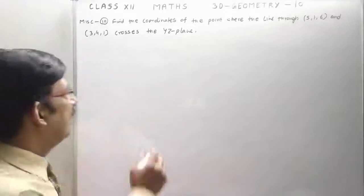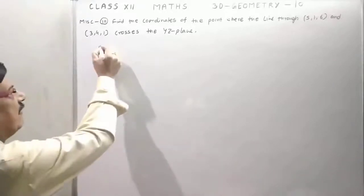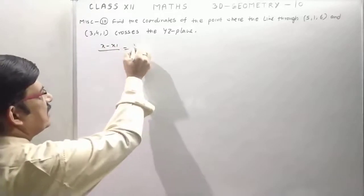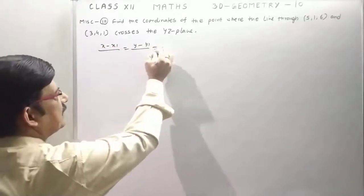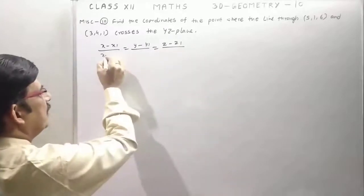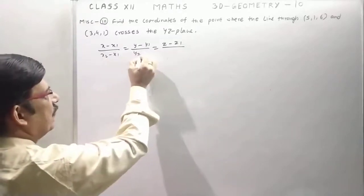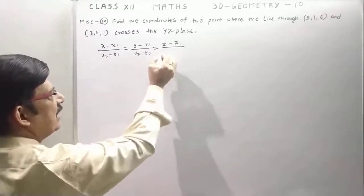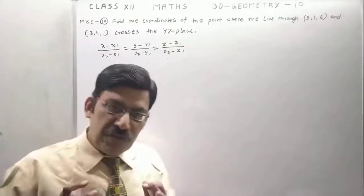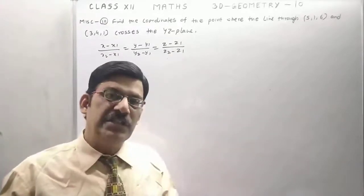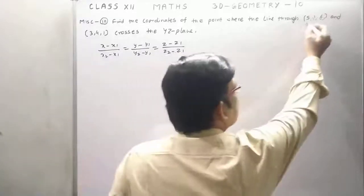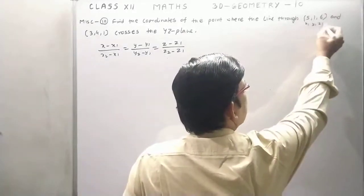For that we have the formula: (x minus x1) upon (y minus y1) upon (z minus z1) upon (x2 minus x1), (y2 minus y1), (z2 minus z1). This is the formula for the equation of a line passing through two points, where (x1, y1, z1) and (x2, y2, z2) are the given points.